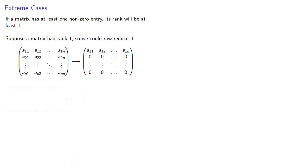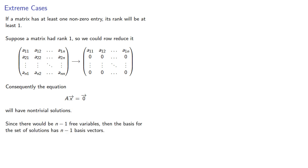And consequently, our matrix equation will have non-trivial solutions. Now since in this case there would be n minus 1 free variables, then the basis for the set of solutions would have n minus 1 basis vectors. So 0 is an eigenvalue with multiplicity n minus 1.